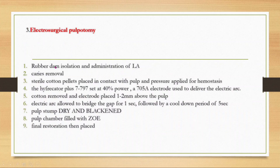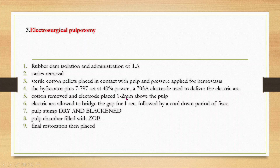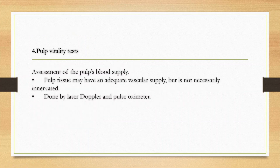Electrosurgical pulpitomy follows the same procedure but uses an electrical method. After isolation and local anesthesia administration, caries removal, and cotton pellet placement, the high-frequency unit is set at 40% power and a 705-ampere electrode is used to deliver the electric arc. The electrode is placed 1 to 2 mm above the pulp, the electric arc is allowed to bridge the gap for one second, followed by a cool-down period of five seconds. The pulp stump becomes dry and blackened, then the pulp chamber is filled with zinc oxide eugenol and final restoration is placed.